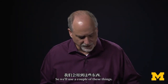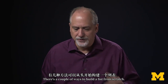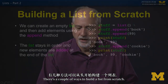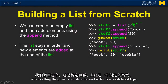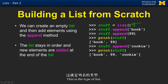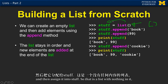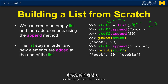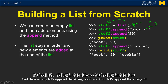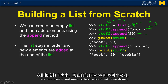So we'll use a couple of these. There are a couple of ways to build a list from scratch. We're calling this a constructor. List is a predefined type, so we say make a brand new list — it's the same as saying give me an empty list and then assign it into stuff. That is a list with nothing in it, so the length is zero. Then we say let's append the string 'book', and then append the string '99'. We print it and now we have a list with two items.